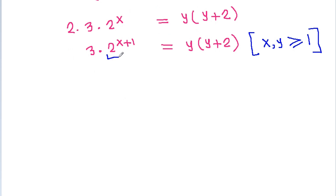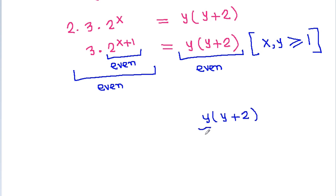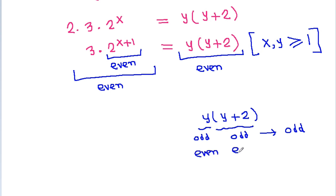Now, 2^(x+1) will be even, so 3 times 2^(x+1) will be even, and hence y times (y+2) must be even. In y times (y+2), if y is odd then (y+2) will also be odd and the product will be odd. So y and (y+2) must both be even.